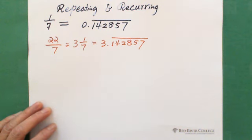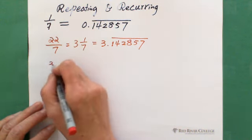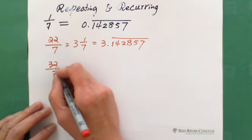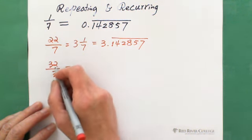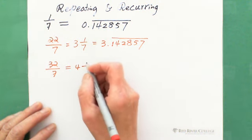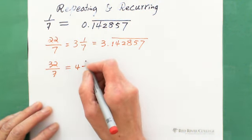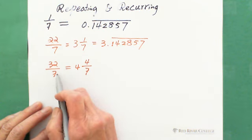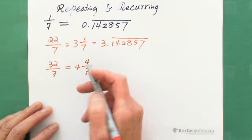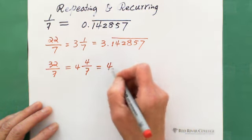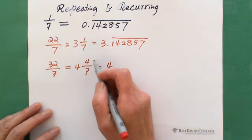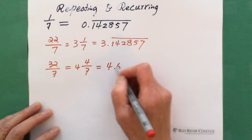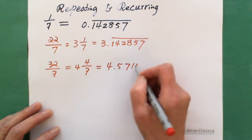If you have 32 over 7: 32 divided by 7 is 4 with remainder 4, since 4 times 7 is 28 and 32 minus 28 is 4. So you have 4 and 4 over 7. Now 40 divided by 7 is 5, so starting from 5, the decimal goes 5, 7, 1, 4, 2, 8.